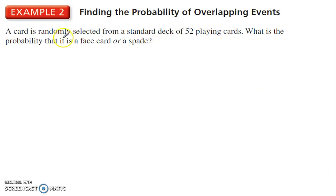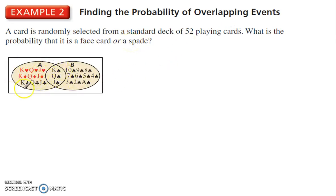Alright, now if we want to look at overlapping events, we are again selecting from playing cards, and we have a face card or a spade. Now notice that there are face cards that are spades, so that overlaps. Okay, so again, a Venn diagram would look like this. The king, queen, and jack of spades overlap, and they are both face cards and spades. So we're going to have to subtract those three.